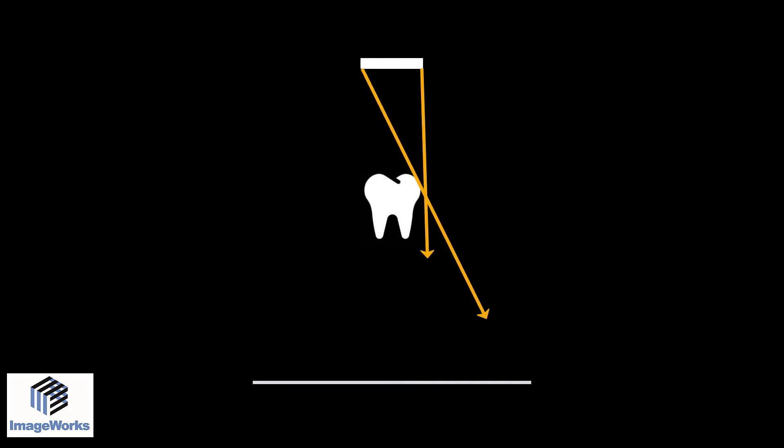Because the actual source is not a single point and the image registered by the sensor is a projection, any given point on the anatomy will be registered by the sensor in more than one location. This contributes to image blurriness.